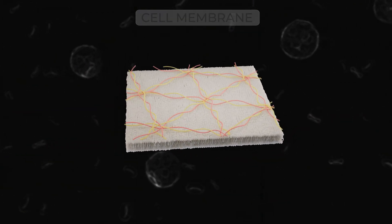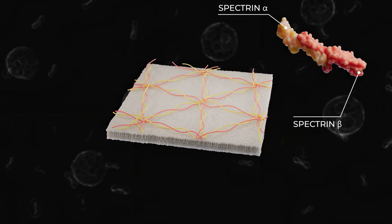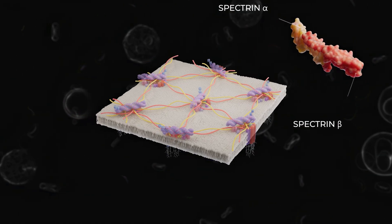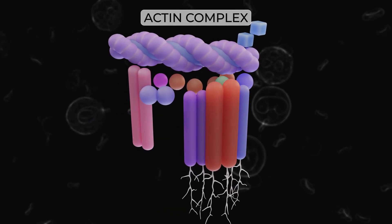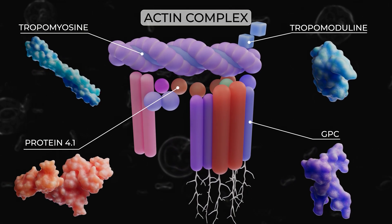On the inner surface of the cell membrane, there is a cytoskeletal mesh composed of alpha and beta-spectrin filaments. At the points where spectrin filaments intersect, there are actin-based junctional complexes.